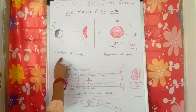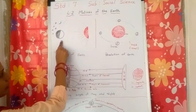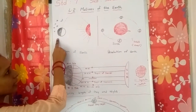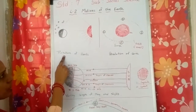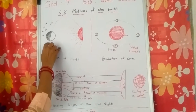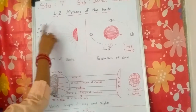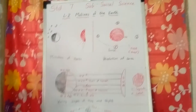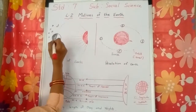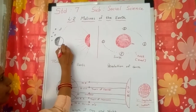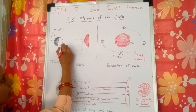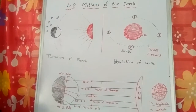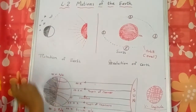What is rotation? When the earth moves on its own axis, it is called rotation. The earth takes 24 hours to complete one rotation, and it forms day and night.